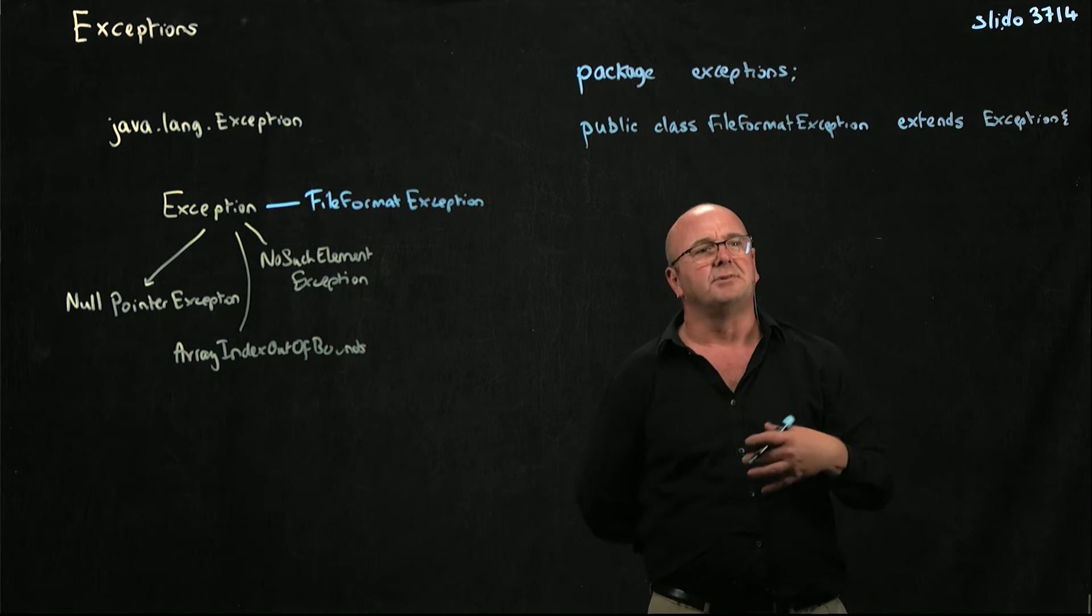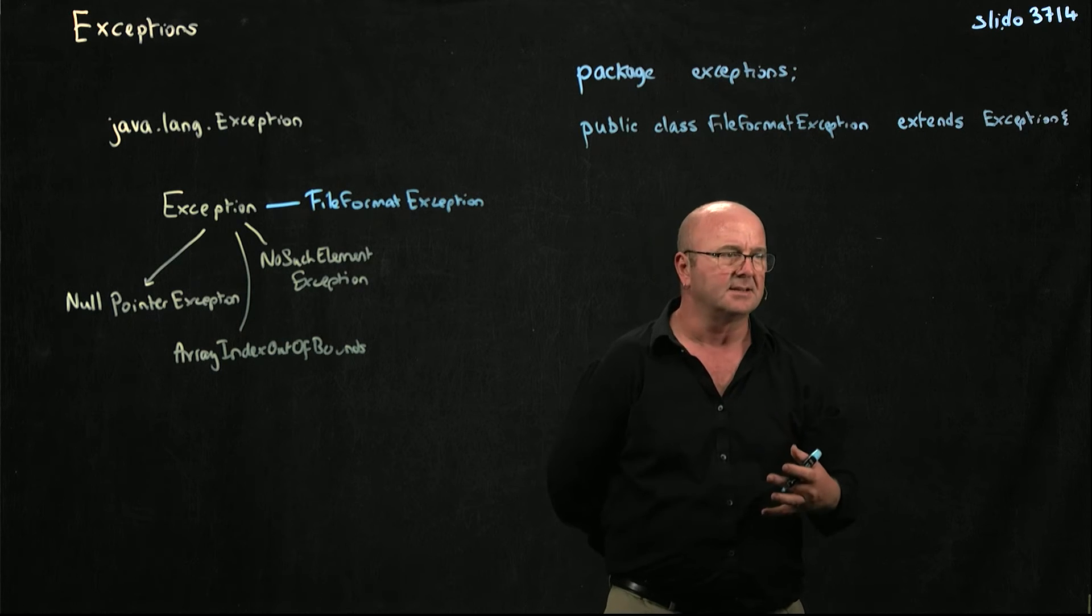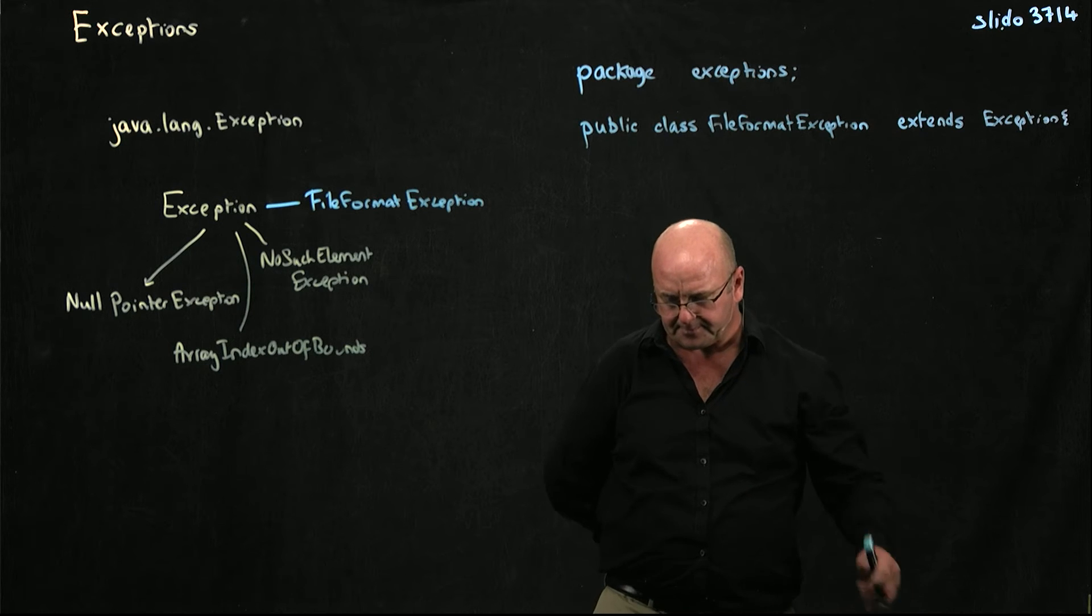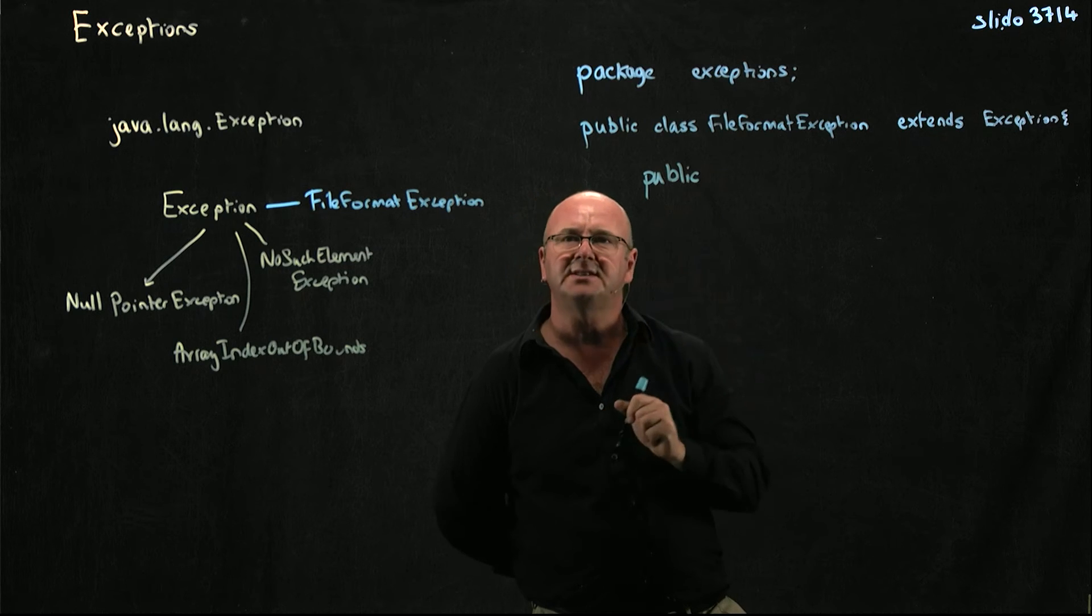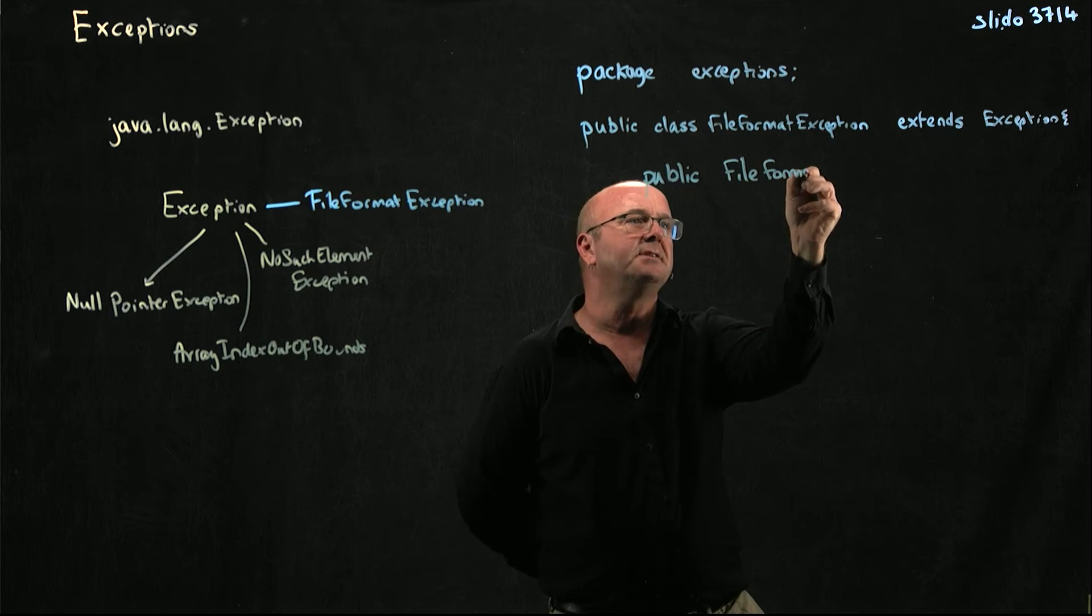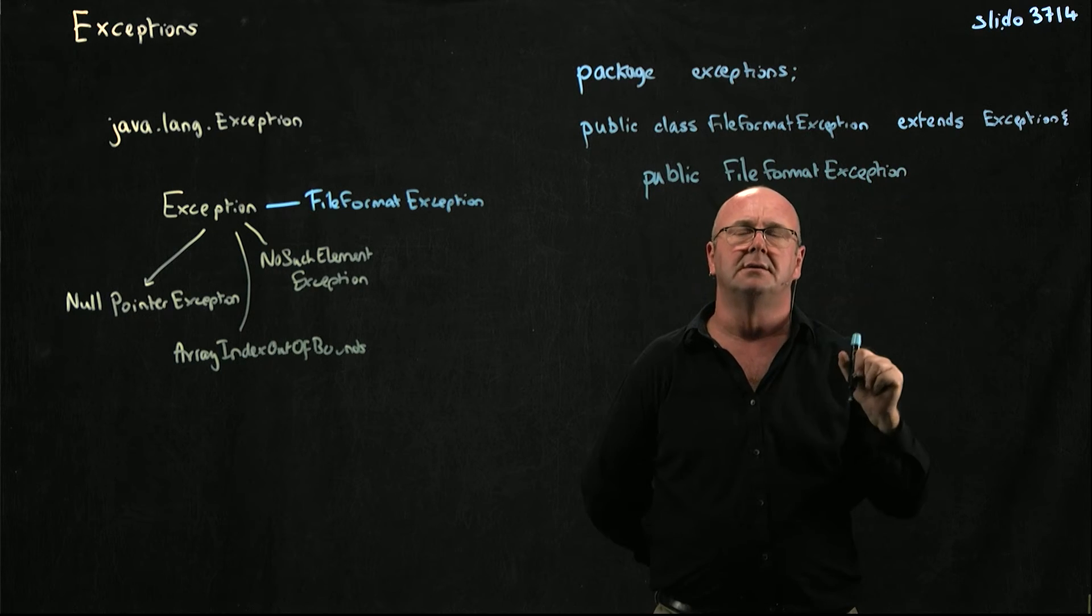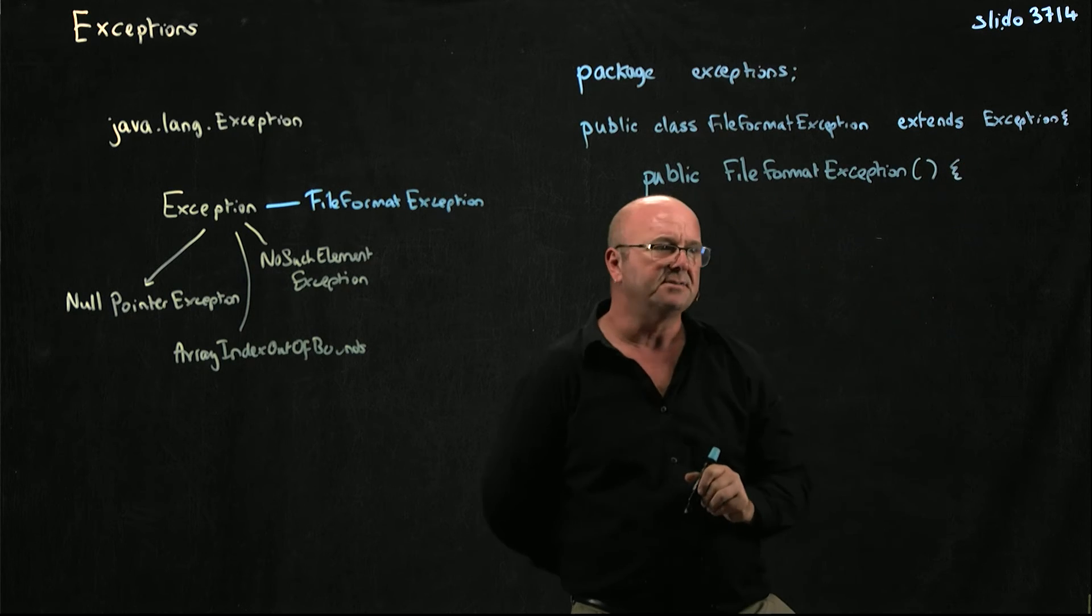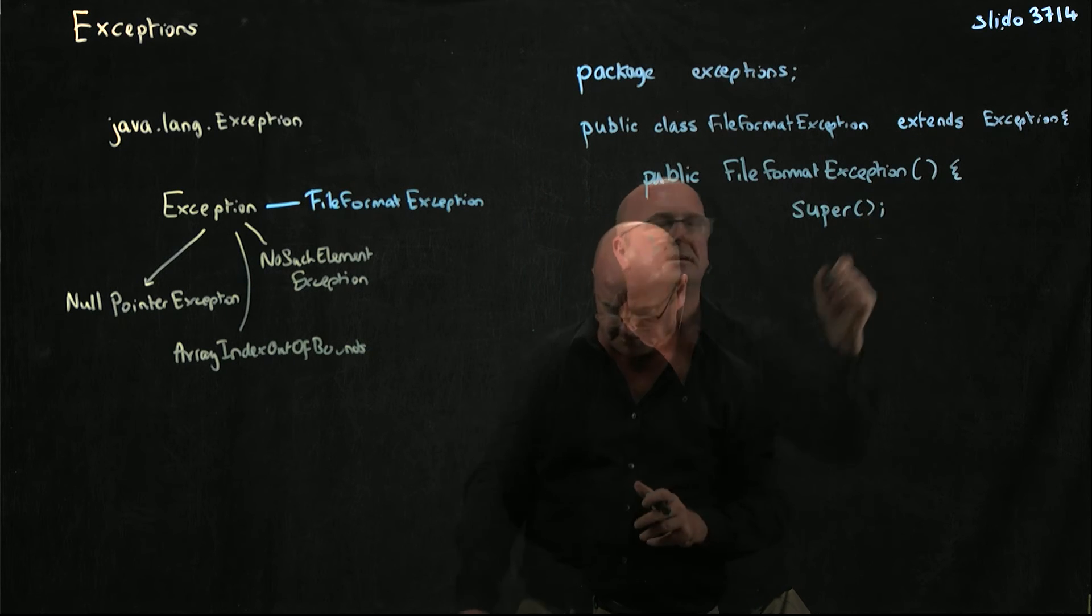The exception class is going to do all of the heavy lifting for us. We're basically not going to do anything at all. We're just going to be lazy. The best thing about programming is being lazy. And so we're going to have a constructor. We're going to have two constructors. The first is our default constructor, file format exception. And file format exception. All it's going to do is say, let's call super.